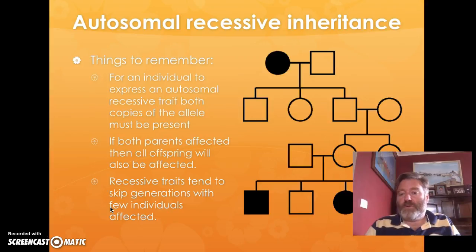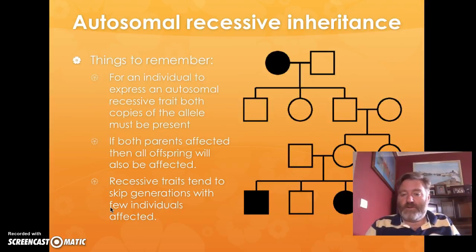We can see how the trait skipped two generations to turn up again, which suggests that both the mother and the father must be carrying that allele for red hair but not showing it. And so they've passed that particular allele onto the first son and the first daughter, whereas the second son and third son have missed out completely.